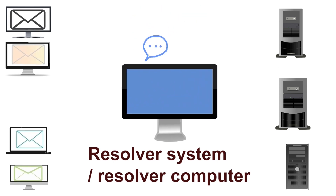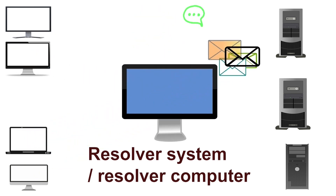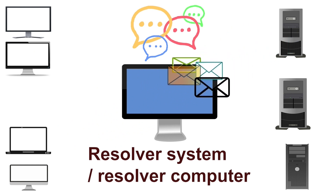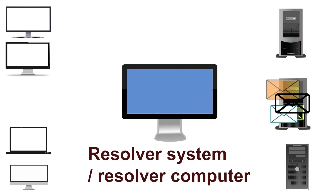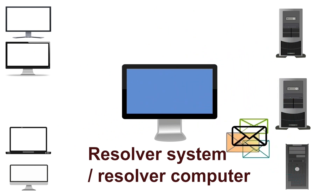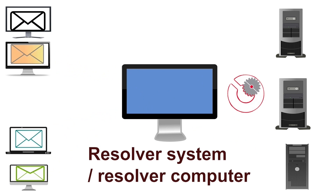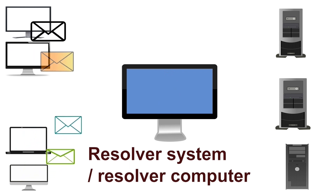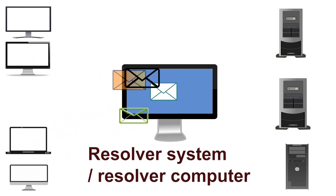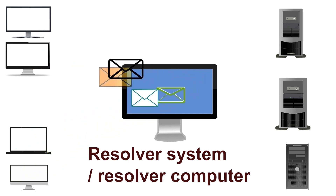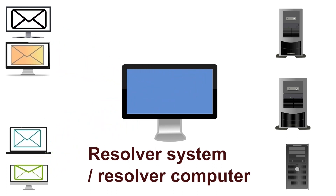Once the resolver system is configured, all other computers do not need to communicate with DNS servers directly. They send their queries to the resolver system. The resolver system resolves each query and answers the requester system. The resolver system also caches the answer for further use. If it receives a query for the same name, it resolves the query from the cache.